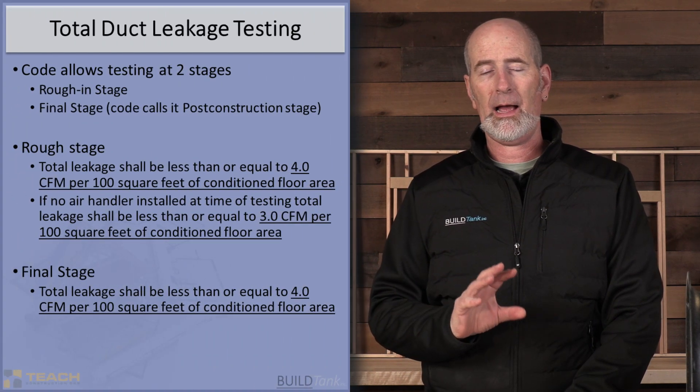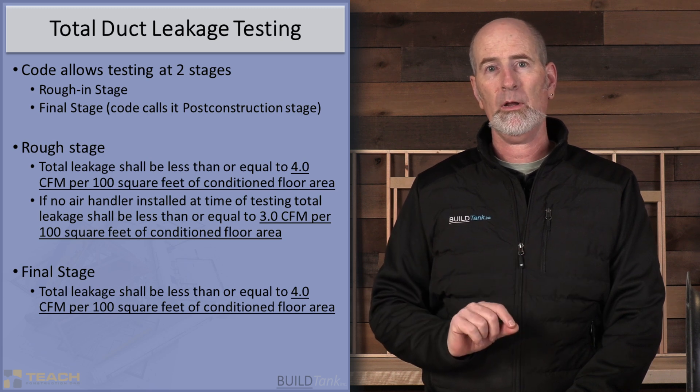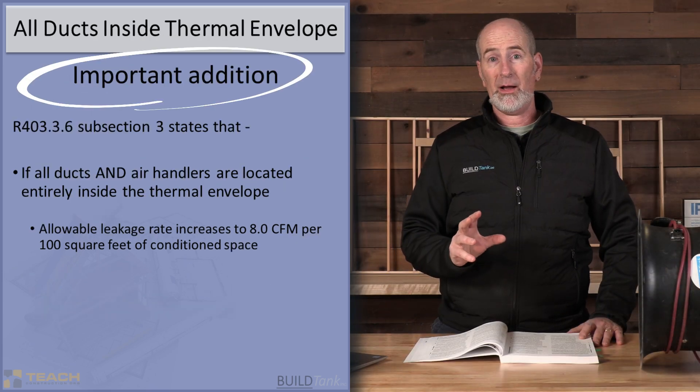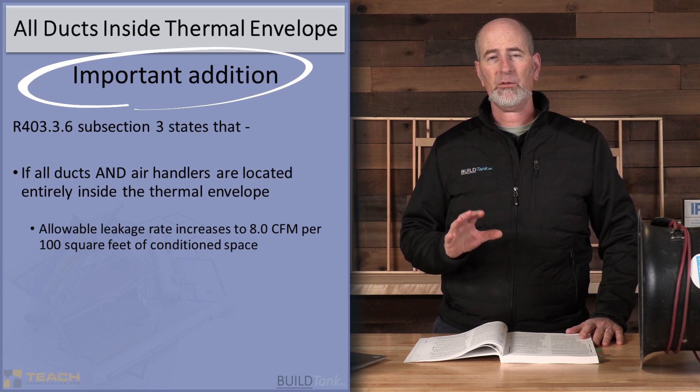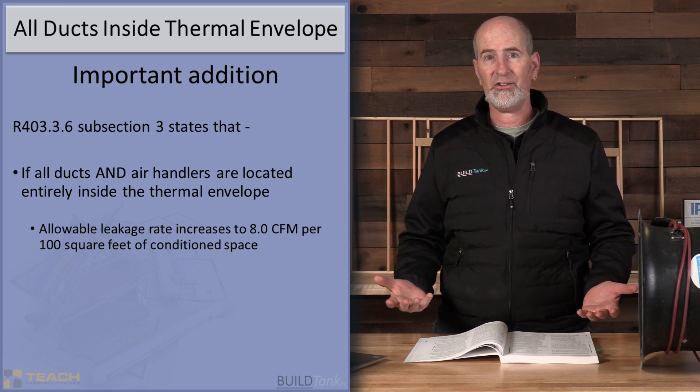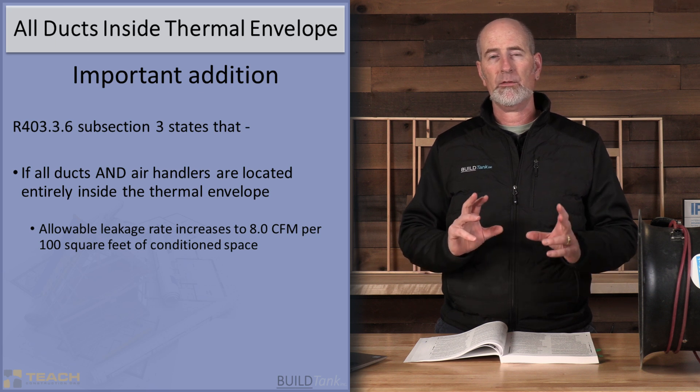You're allowed to test either at a rough stage of construction or a final stage of construction. The requirement is that the duct system can't leak more than 4 CFM per 100 square feet of conditioned floor area. Conditioned floor area is any floor area that's inside the building thermal envelope that is being conditioned. Unfinished space would still be calculated within the conditioned floor area — space inside a furnace room or a conditioned basement that's not finished would also be considered conditioned floor area.